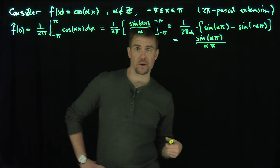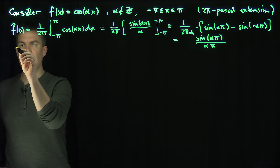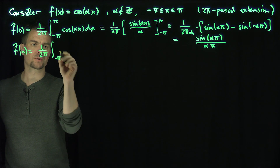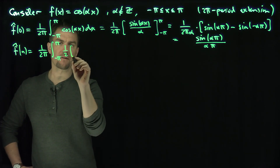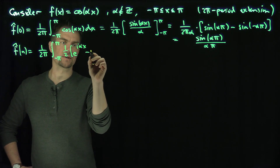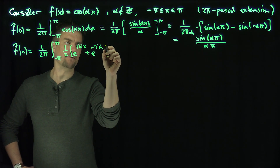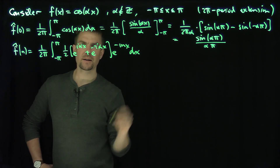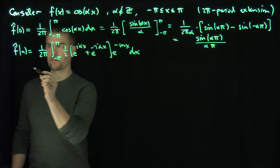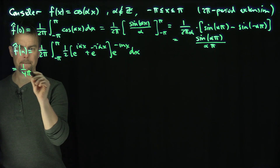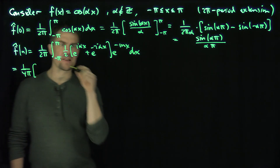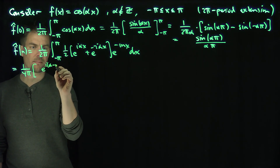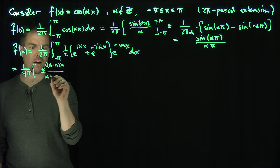Again, alpha is not an integer, so there's no danger of this being zero. Now let's find f̂(n) where n is not equal to zero. We'll use the complex version of cosine — the fact that cos(αx) = ½(e^(iαx) + e^(-iαx)) — multiplied by e^(-inx) dx.